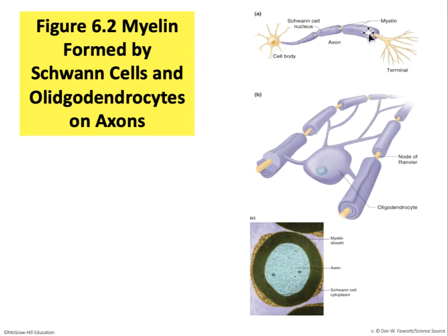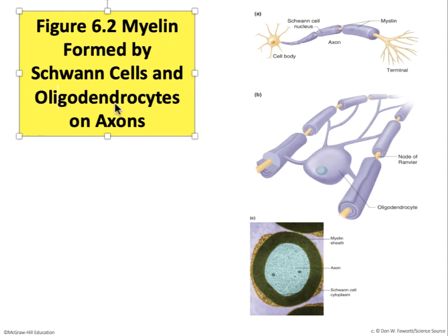The myelin sheaths actually belong to Schwann cells — you can see a nucleus of one of them right here. In the central nervous system, the same job is done by a different class of cells called oligodendrocytes. The oligodendrocytes are highly branched cells, architecturally different from Schwann cells, but they perform a similar function in providing support and insulation. A cross-section reveals that the axon is very intimately associated with the fatty membrane layers of the Schwann cells or the oligodendrocytes.